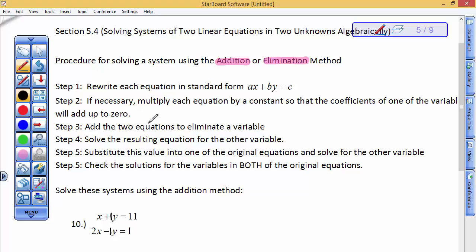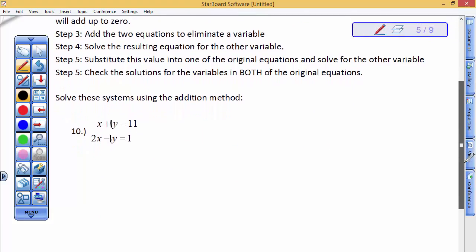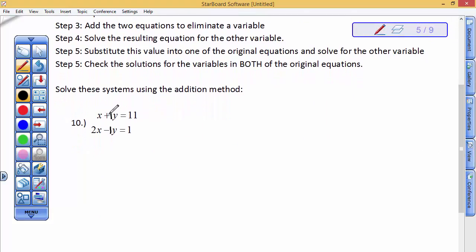So step number three is to add the two equations to eliminate a variable. So I'm going to go ahead here and do that. Remember, this is equal to this, and this is equal to this. So when you add the left sides and add the right sides, you're adding equal things. So this 1x and this 2x adds to be 3x. This 1y and a minus 1y is gone. 11 and 1 adds to be 12, and then you solve for the variable that's left because you eliminated by the addition method one of the letters and x is equal to 4.